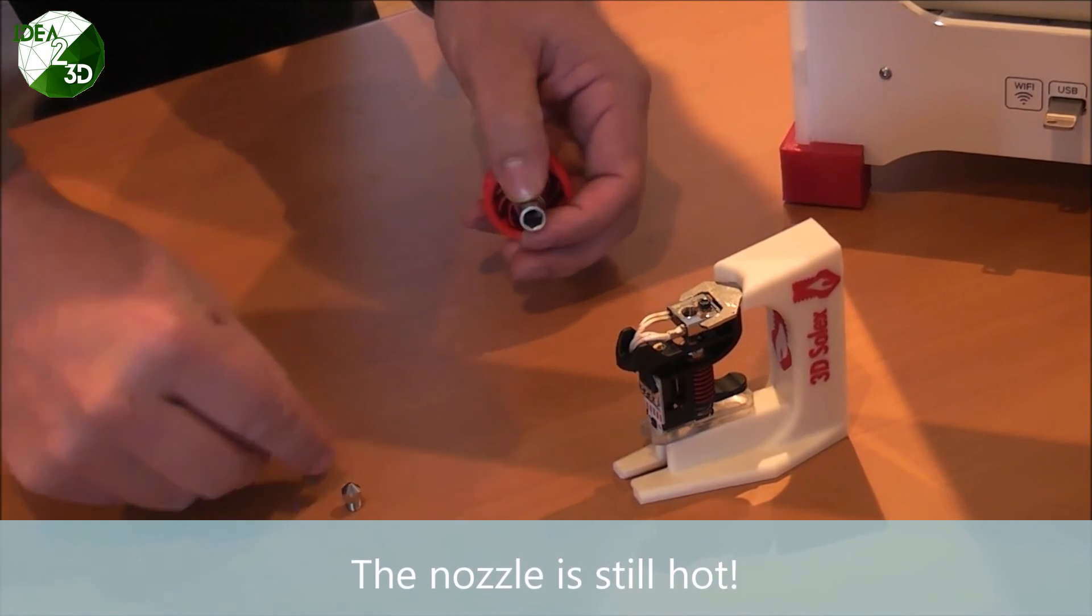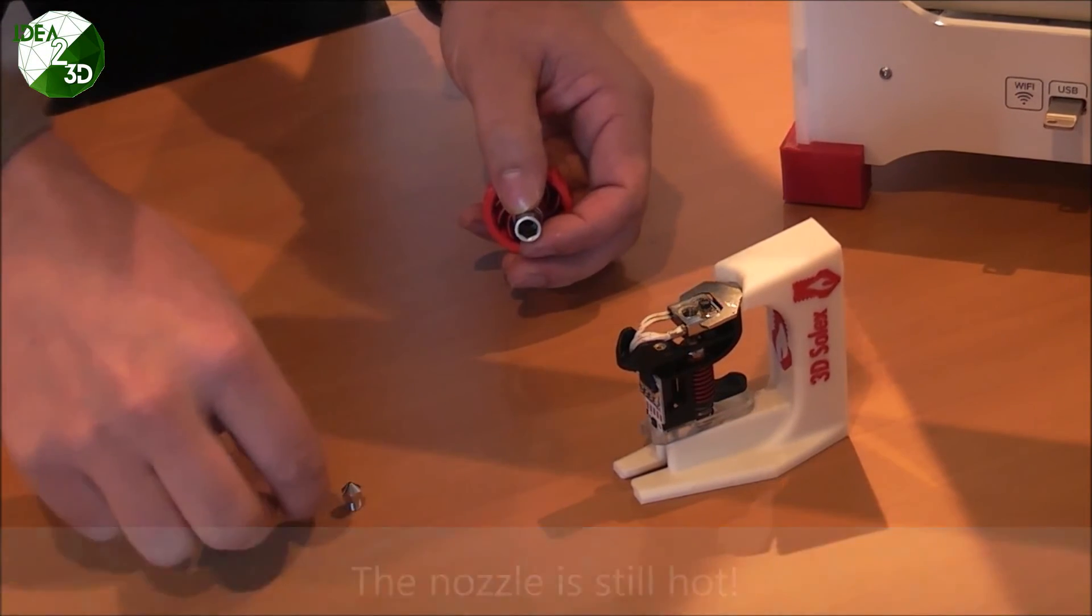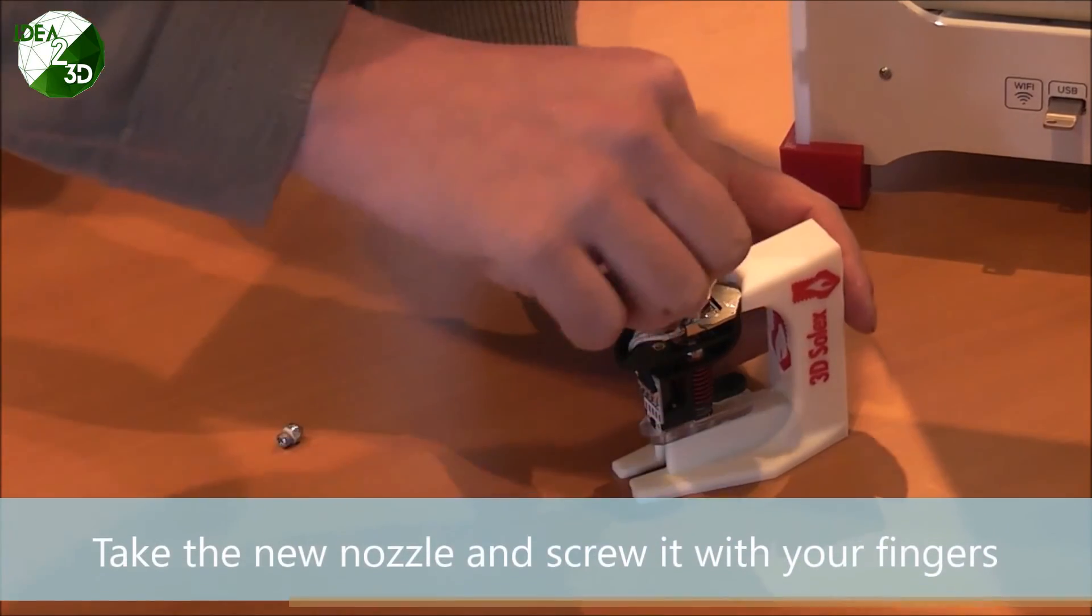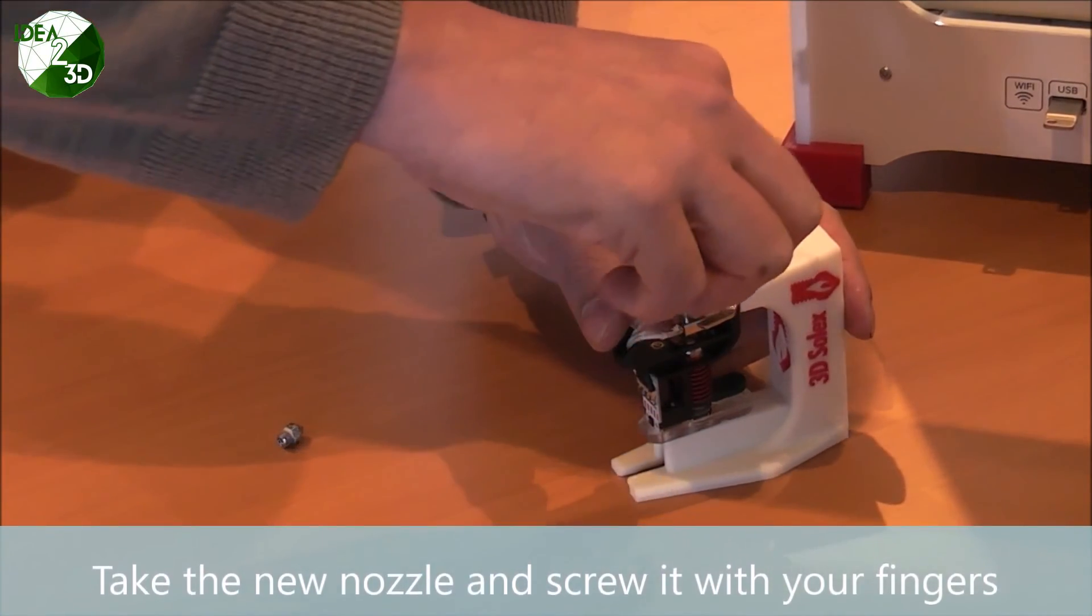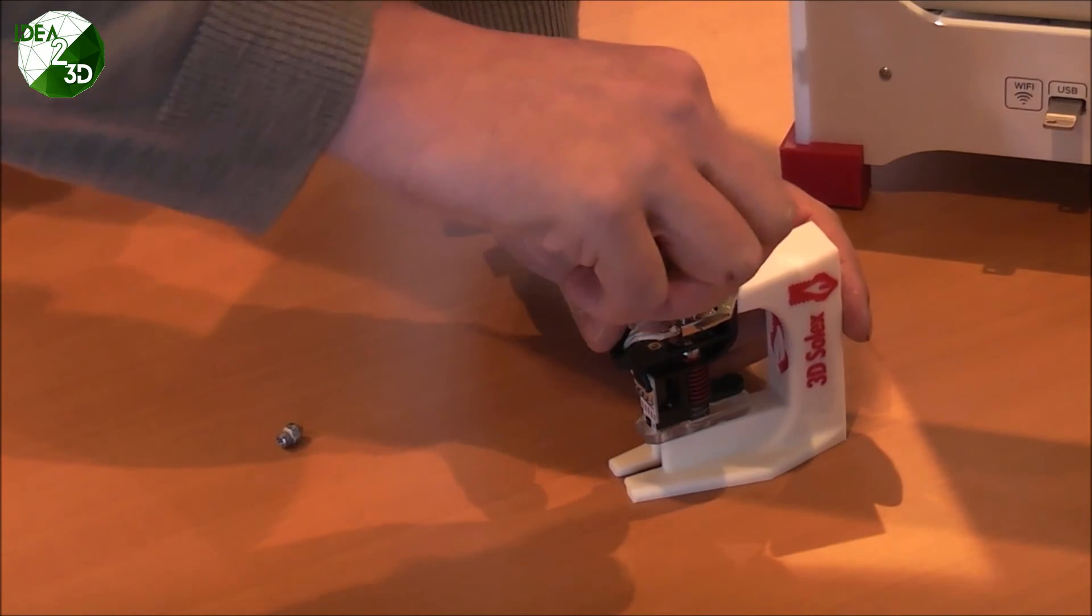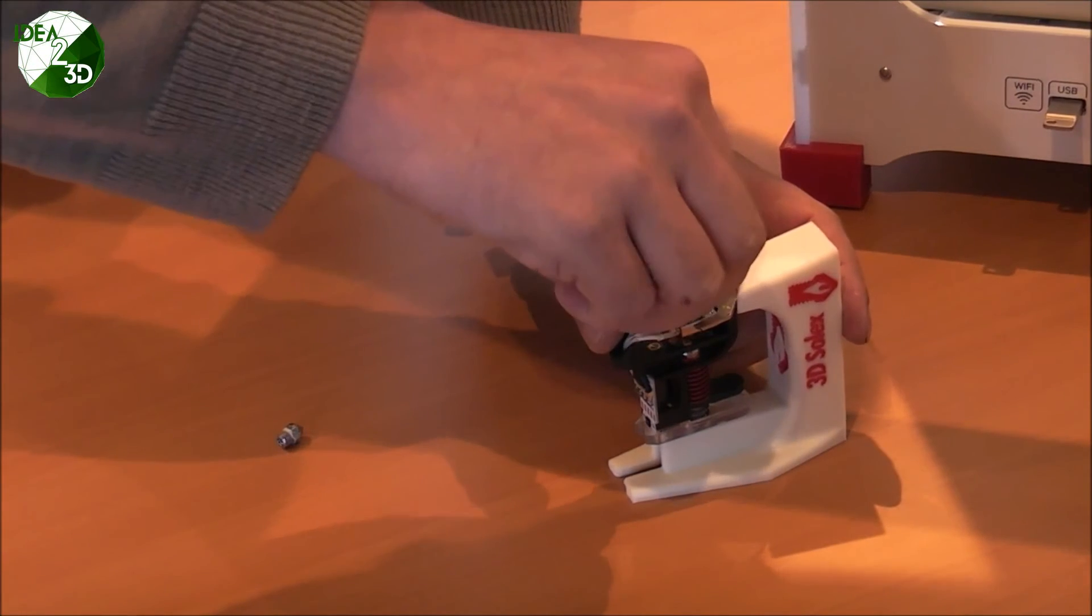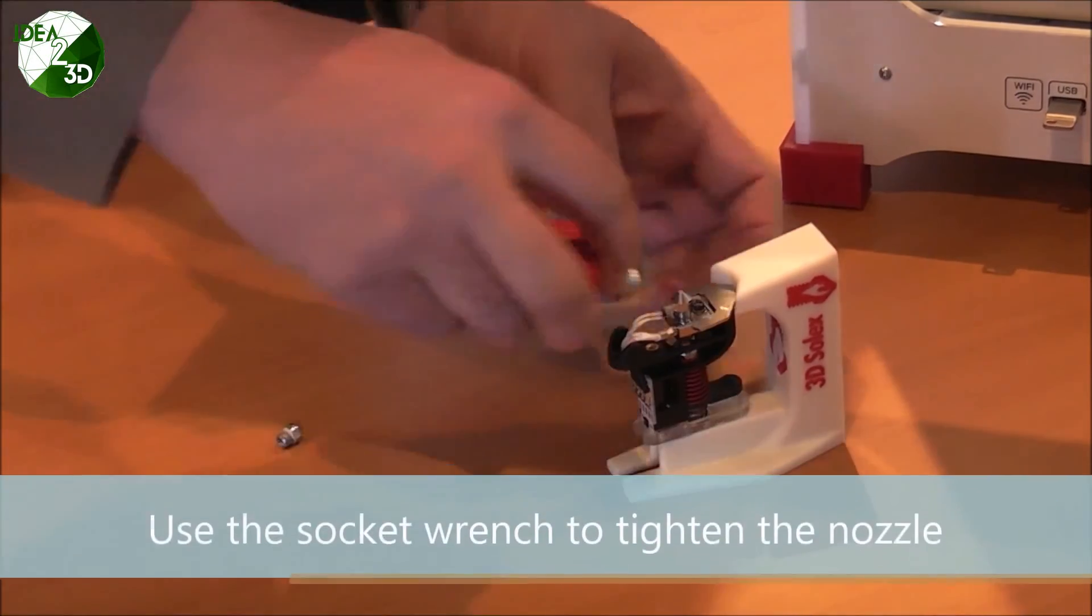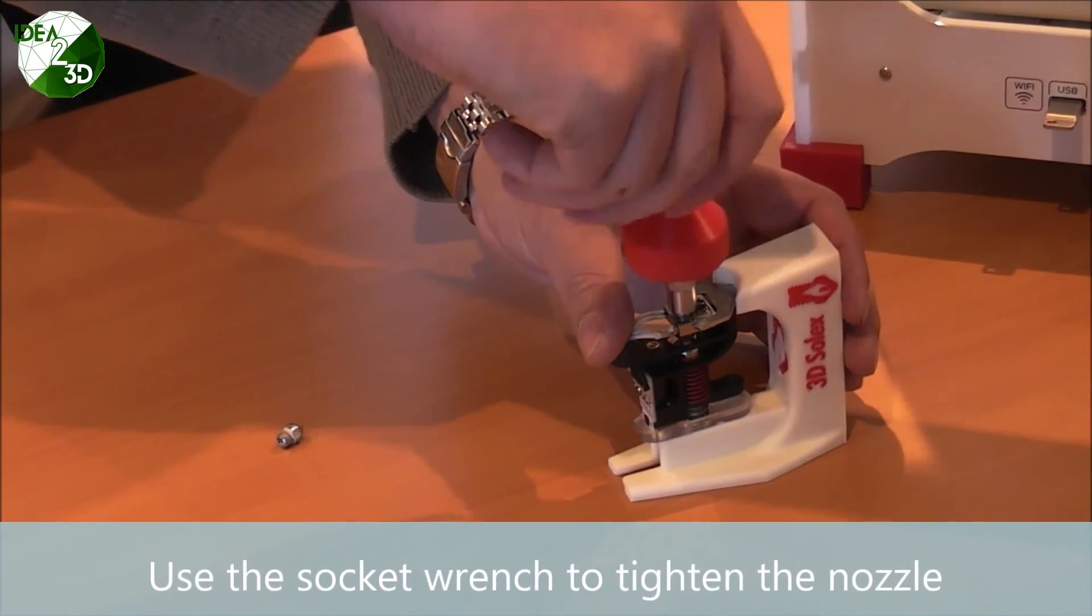The nozzle is hot so you will burn your fingers. Take the new nozzle and screw it with your fingers in the core. Then use the socket wrench to screw it as much as you can.